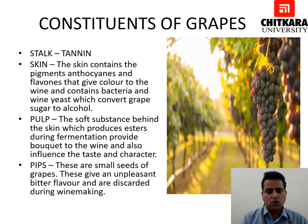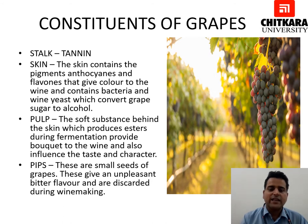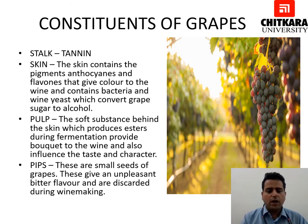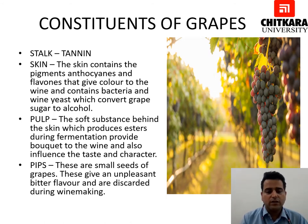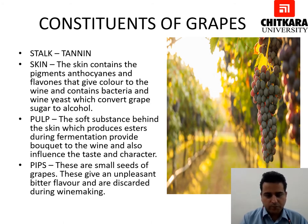Next is the pulp, which is the soft substance behind the skin. It produces esters that provide bouquet and aroma to the wine and also influence the taste and character. Finally, we have the pips, which are the small seeds of grapes. They give an unpleasant bitter flavor and are discarded during the process of winemaking.